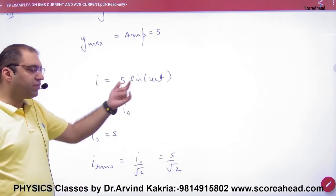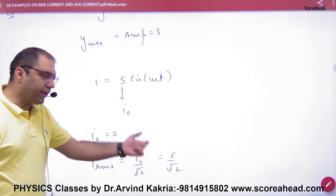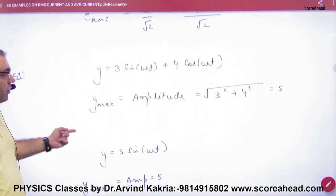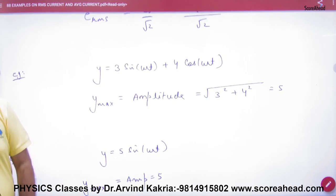So if the current is 5sin(ωt), then maximum current is 5. So RMS can be calculated. In that way, if in SHM equation, the rule is sin and cos, how would we do it?